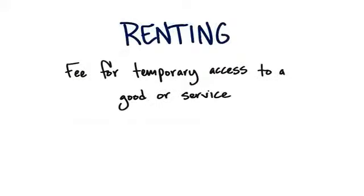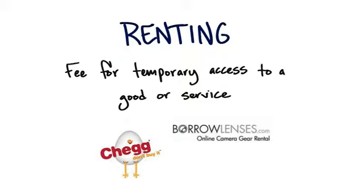There are other revenue models, like renting. We rent houses, but the best example for me is Chegg in the book business. Now all of a sudden you could temporarily rent books, or borrow lenses. Instead of buying expensive camera gear — like expensive Hasselblads or expensive lenses — which you might use only intermittently for photo shoots, why not rent them for a temporary amount of time?